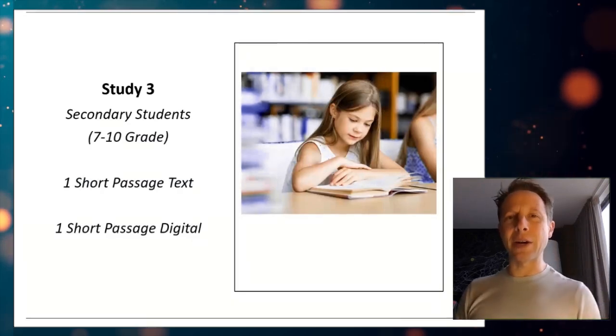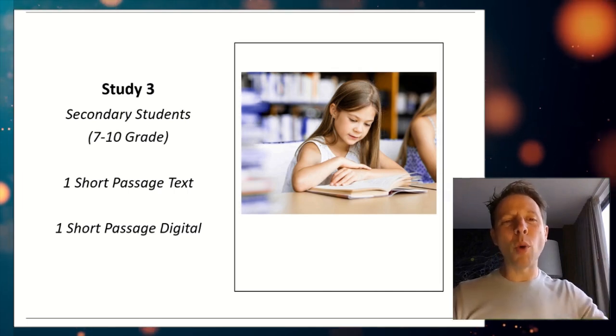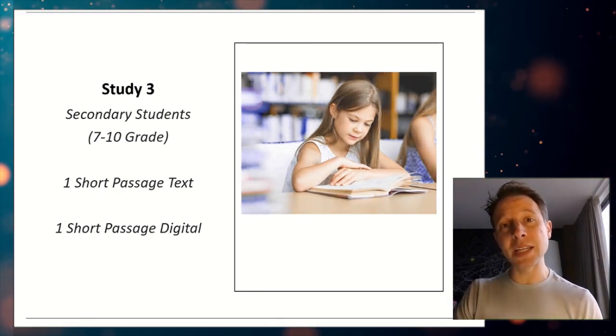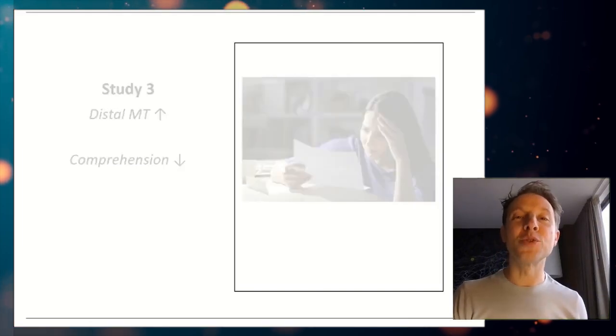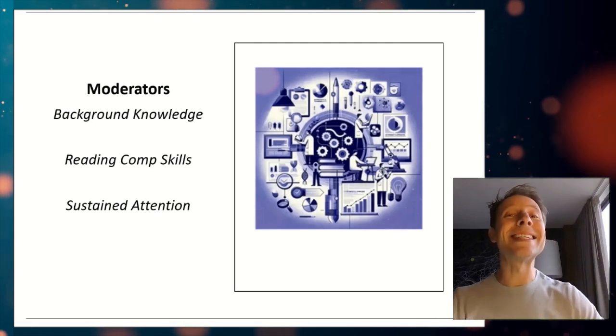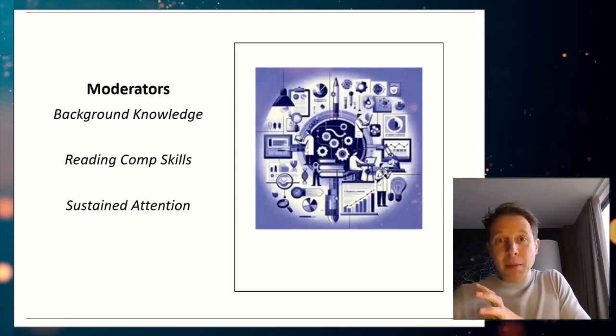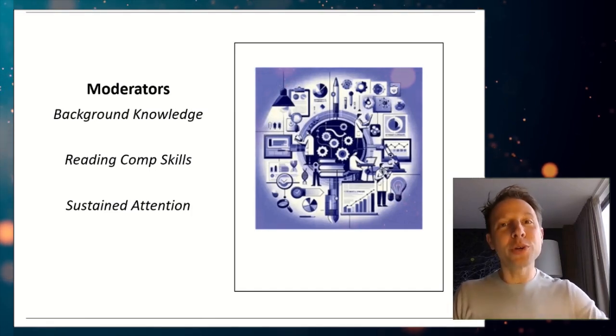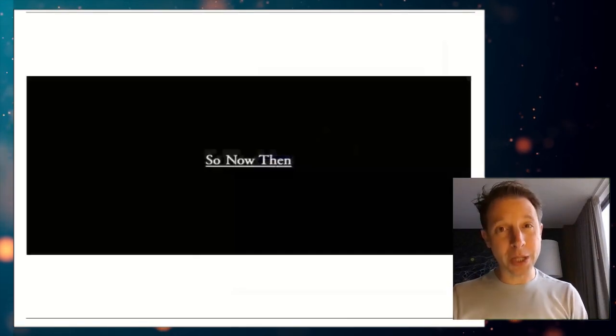And in their third study, these researchers took a look at secondary students. They said, let's take it out of the university classroom, bring it into seven to 10th graders. And these kids had to read one short digital and one short hard copy passage, correlated to their behavioral habitual multitasking in the real world. And what did they find? The exact same thing. As habitual multitasking goes up, performance goes down. And here they took a look at moderators. They took a look at background knowledge, reading comprehension skills, and sustained attention skills. They actually tested these kids' ability to sustain attention to see maybe this multitasking thing can be offset by kids with good attention. What do they find? No impact whatsoever. It doesn't matter how good your attention is. It seems to matter how you are training yourself in your real life. That is going to bleed over into your classroom life.